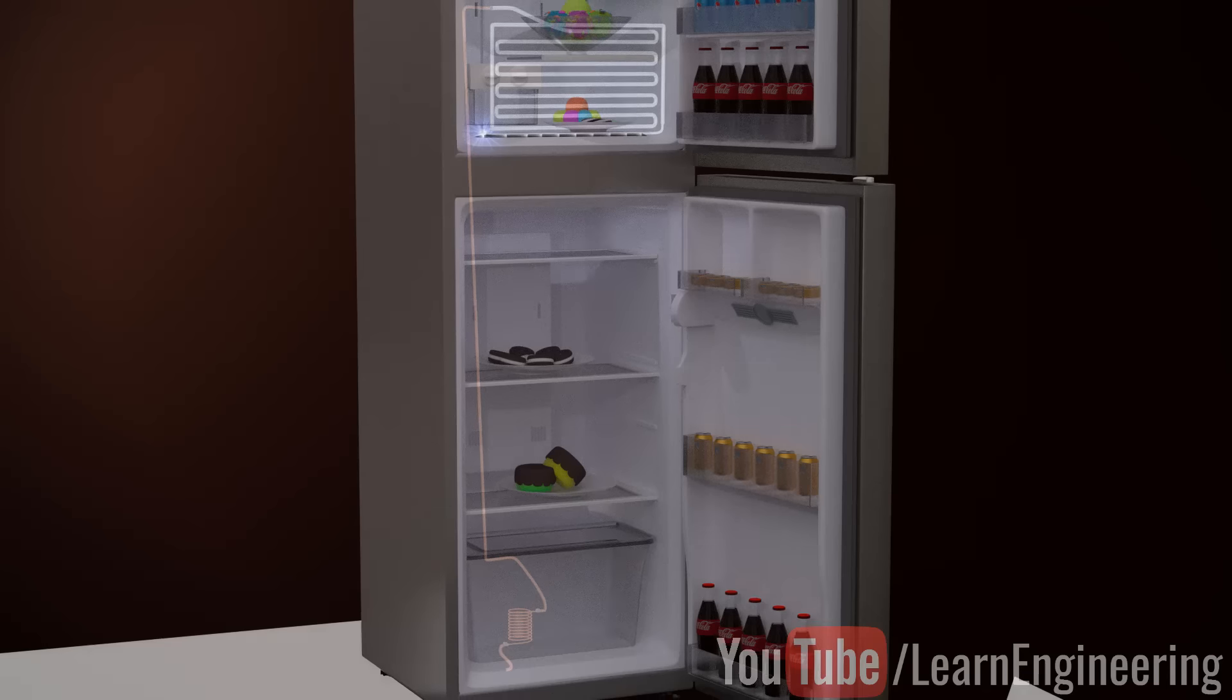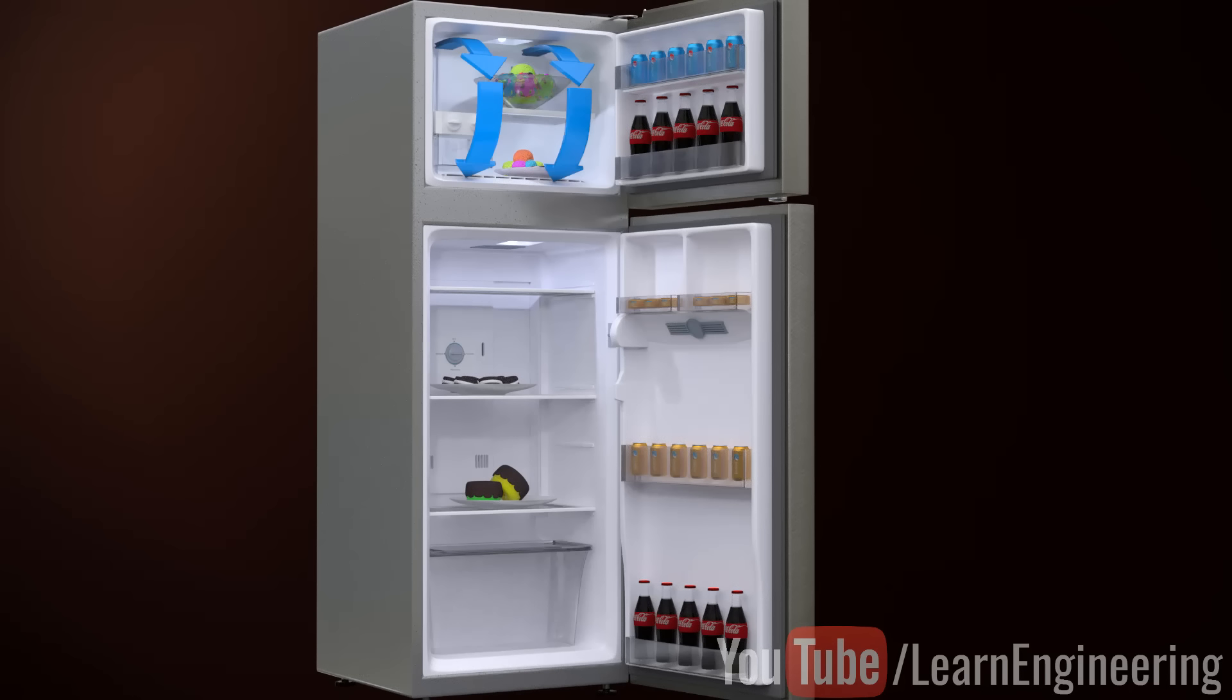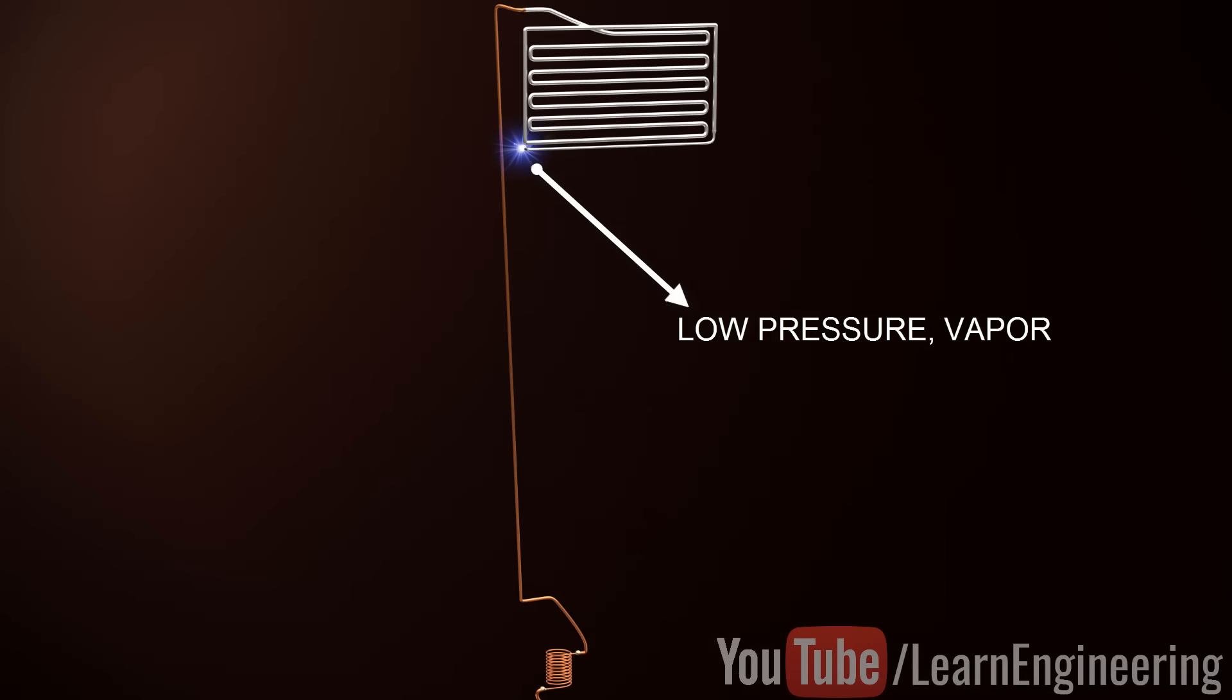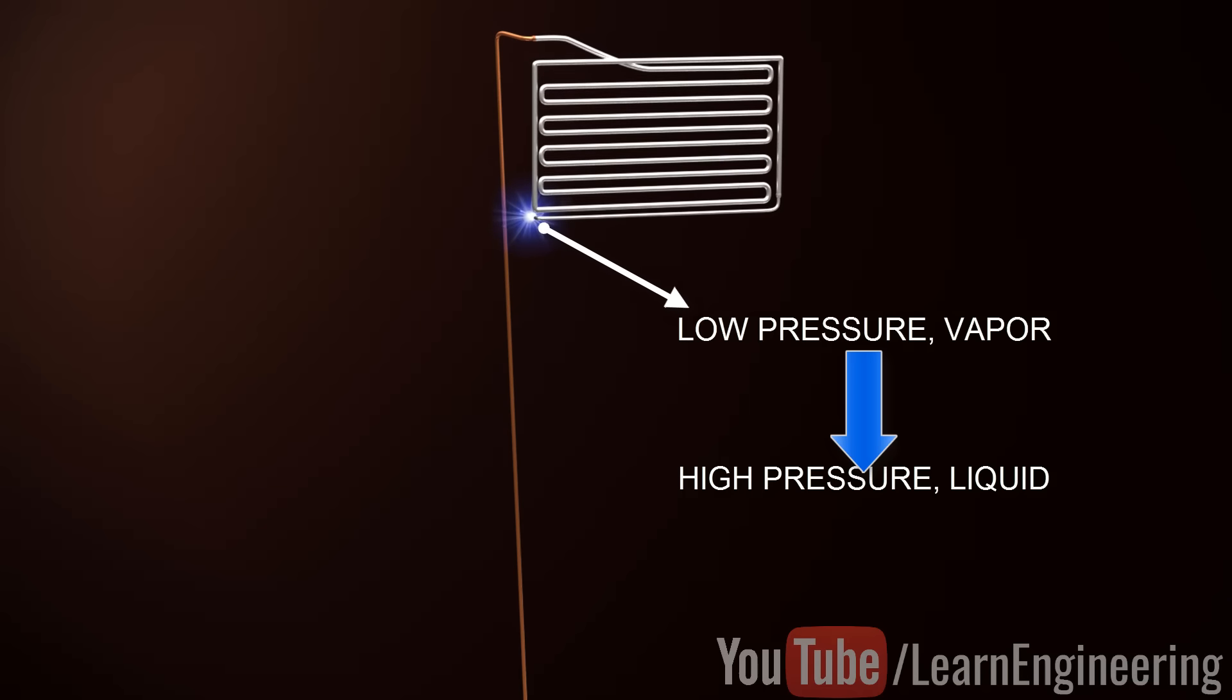With the help of clever air flow circulation inside the refrigerator using an evaporator fan, one can maintain different temperature levels. So, we have produced the required refrigeration effect. If we can take this low pressure refrigerant to the state before throttling, that is high pressure liquid, we will be able to repeat this process.